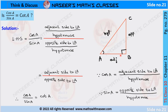The opposite side AC is the longest side, so AC is the hypotenuse. With respect to angle A, BC is the opposite side and AB is the adjacent side. We already know the definition of cos A as the ratio of the adjacent side to angle A by the hypotenuse, and sine A is defined as the ratio of the opposite side to angle A by the hypotenuse. Now consider LHS equal to cos A by sine A, and we substitute these values.